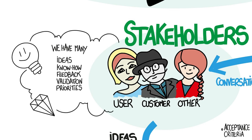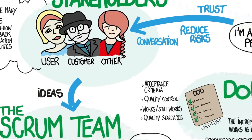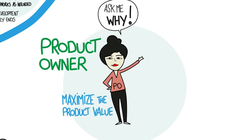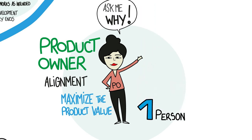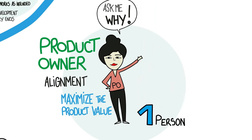validation, and priorities. The challenge is that stakeholders can be noisy, have differing priorities, and have other things to do. Committees can be notoriously slow in making decisions — let's call this the alignment problem. Scrum solves the alignment problem by designating one person who is authorized to make decisions about the product: the product owner. Her decisions are visible in the content and sequencing of the product backlog and in the increments produced every sprint.